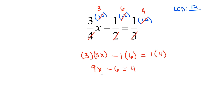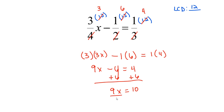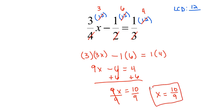So that means we have a linear equation, and we're going to solve it just like any linear equation. 3 times 3x gives me 9x, and negative 1 times 6 is minus 6, equals 1 times 4, which is 4. Now I want to isolate the variable, so I'm going to add 6 to both sides, and I have 9x equals 10. My last step is to divide by 9, and that leaves me with x equals 10 over 9. There's no number that will go into both 9 and 10 besides 1, so this fraction will not reduce. And this is my solution.